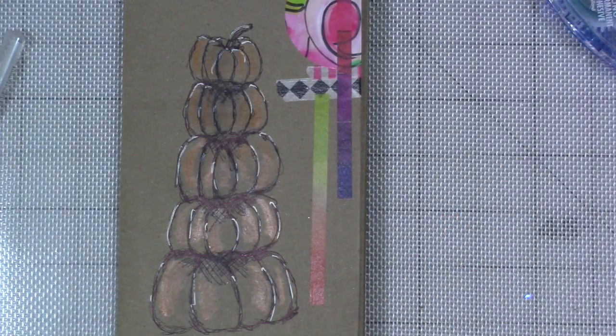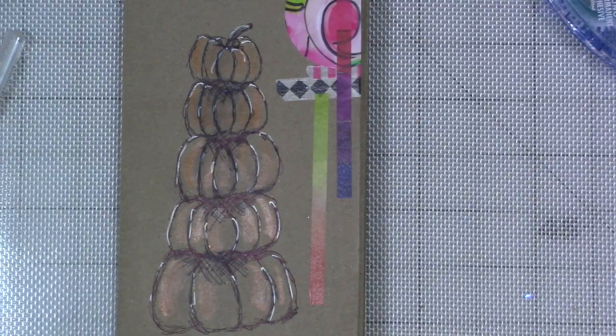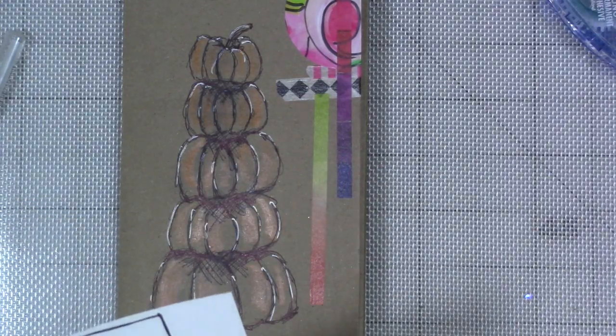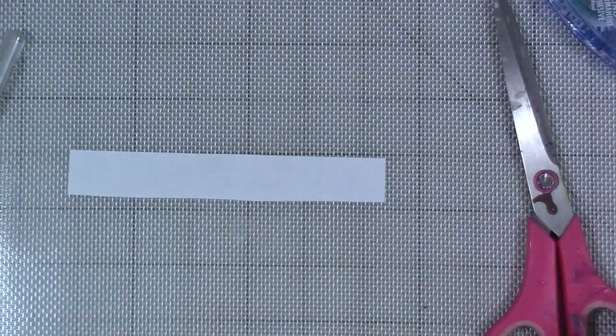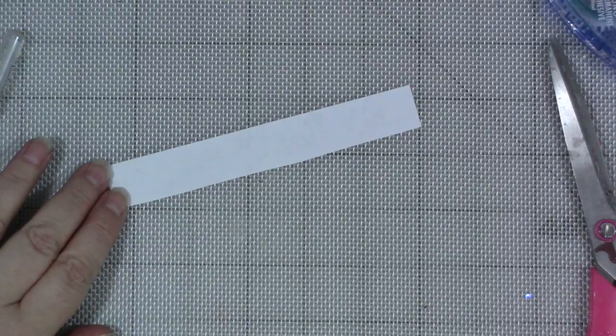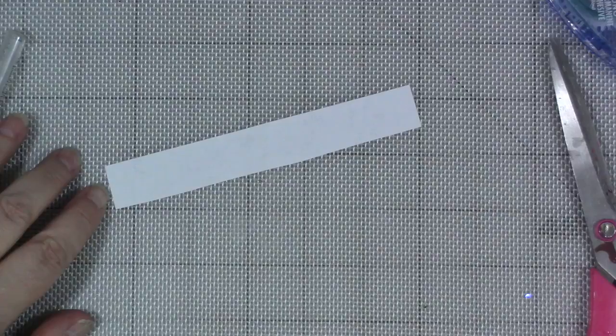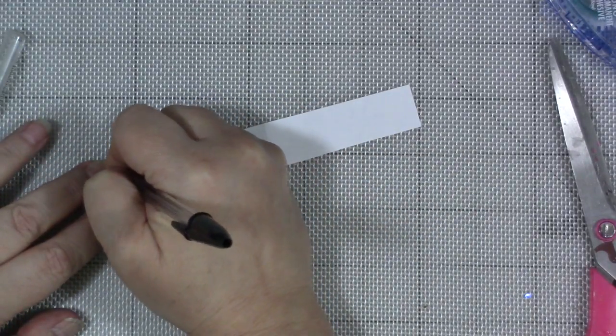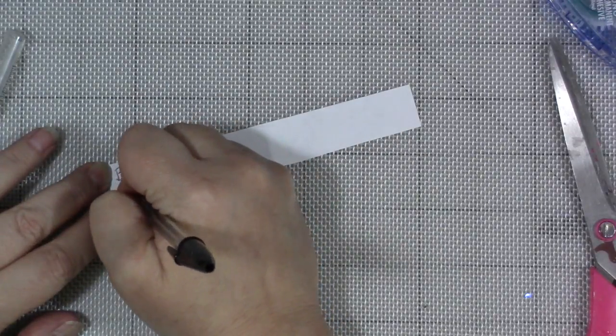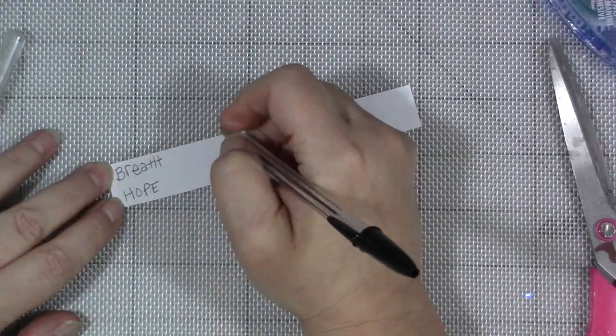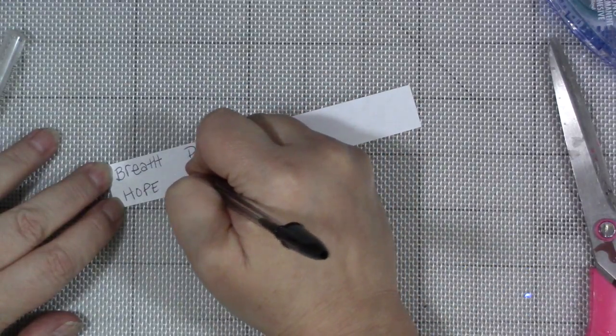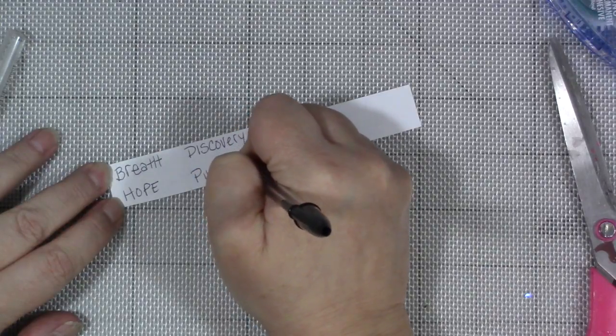The next thing I want to do is grab a scrap of paper. I'm going to just take a little piece of this printer paper. I have five words of gratitude that I want to put on each pumpkin. As I write the words and put them on the pumpkins, we're going to talk about the words. The words are breath, hope, discovery, purpose, and love.